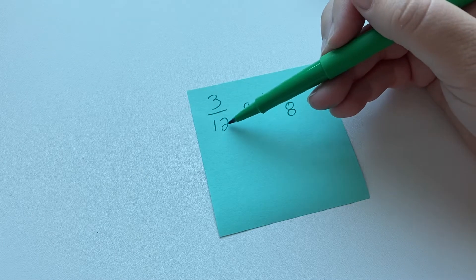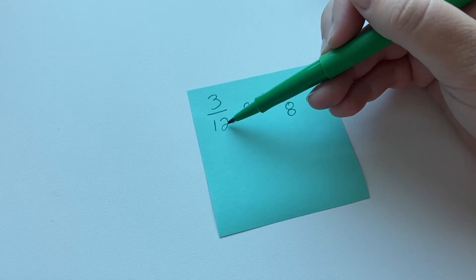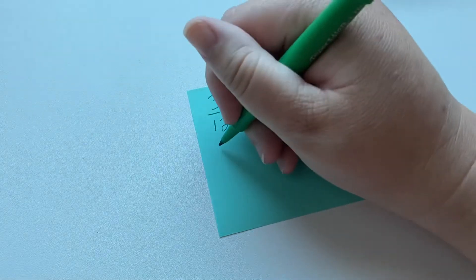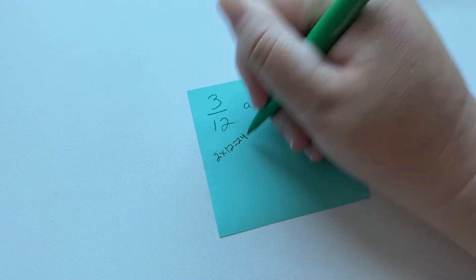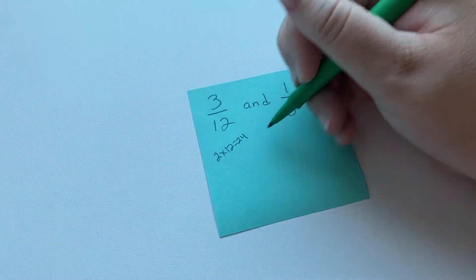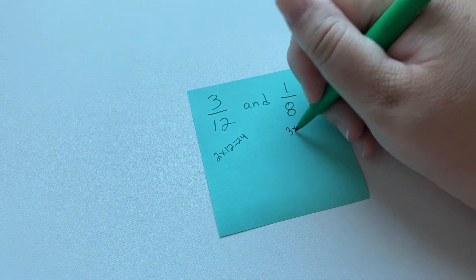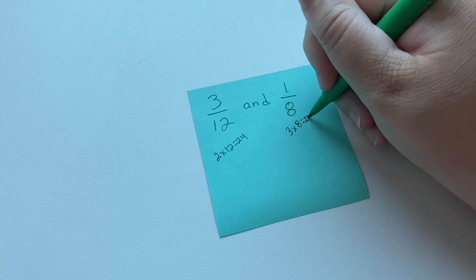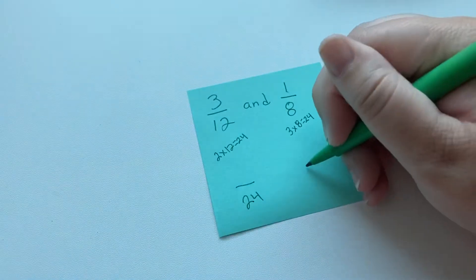So you take the larger number, and you times it by 2, which would be 24. 2 times 12 is 24, so we're going to do 2 times 12 equals 24. So once we have that, we can see if 8 goes into that. 8 does go into that. 3 times 8 equals 24. So our common denominator is actually going to be 24.